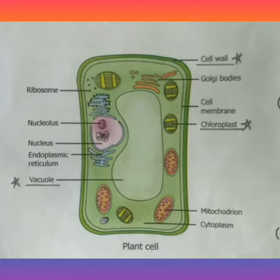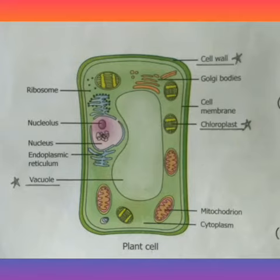The other types of plastids are chromoplasts and leukoplasts. Chromoplasts are colored plastids which impart color to the flowers and fruits. Leukoplasts are the colorless plastids and their main function is to store food in the form of starch and proteins.